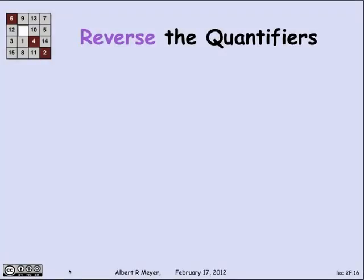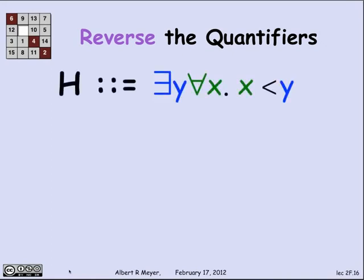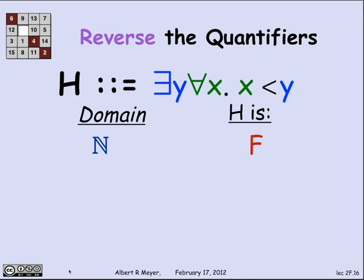Let's reverse the quantifiers and see what happens. It's worth thinking about. So let's call H the assertion that for every y—sorry, that there exists a y such that for every x, x is less than y. So intuitively, what this is saying is there's a biggest element. y is bigger than everything. Well, if the domain is the non-negative integers, then H is false because there's no biggest non-negative integer.